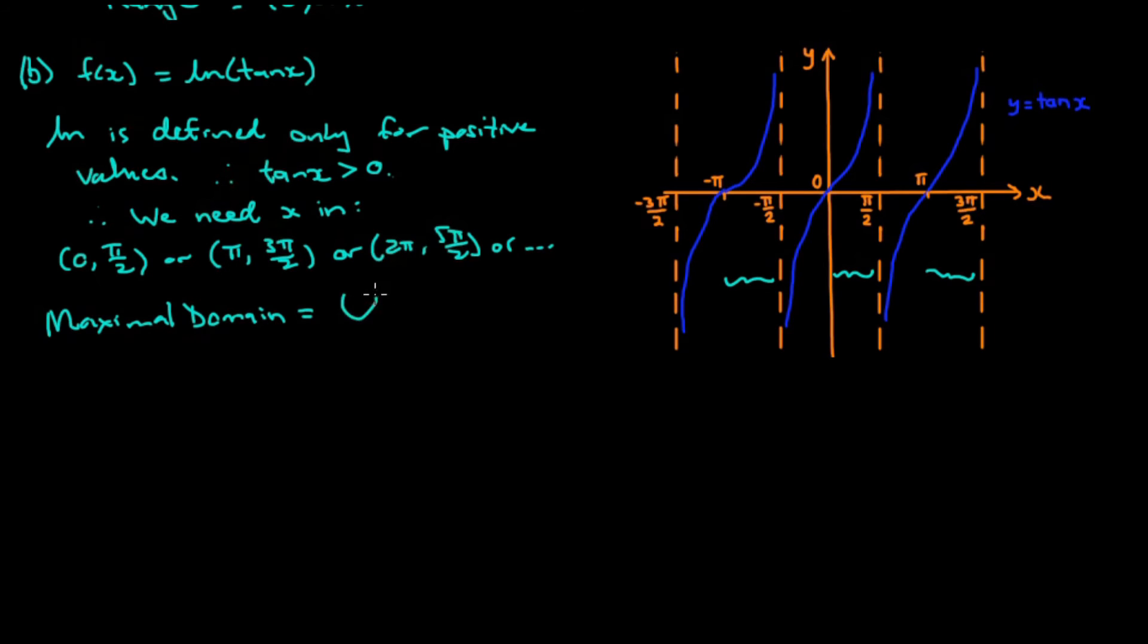So that means our maximal domain is the union of all of these intervals. And we can write that as the union of all integers k of the interval k times pi up to k plus a half times pi. So that's our domain. Now if we look at the range.